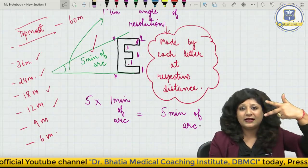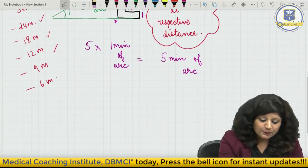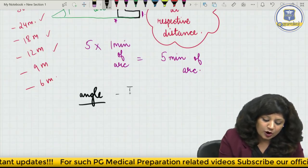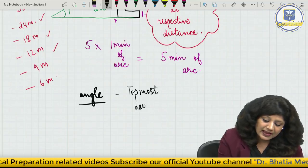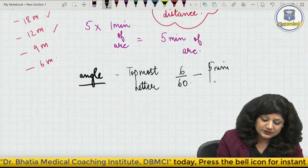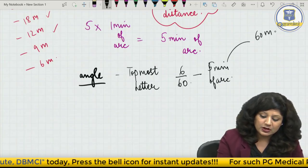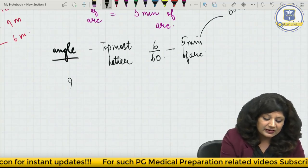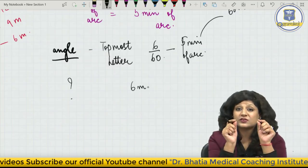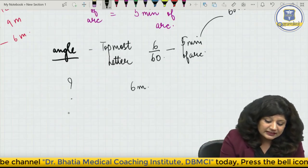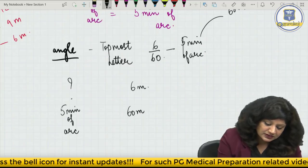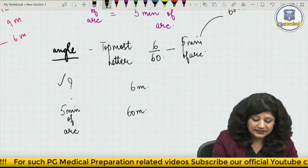How do we solve questions related to this? Suppose they ask: what is the angle made by the topmost letter at a distance of 6 meters? The topmost letter corresponds to 6/60, so it makes 5 minutes of arc at a distance of 60 meters. The secret of solving such questions is to first write what you know: 5 minutes of arc is formed at 60 meters. Now I want to calculate the angle at 6 meters.